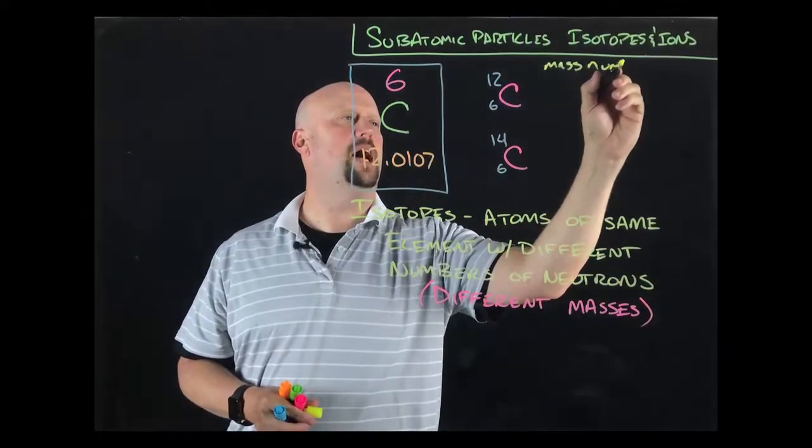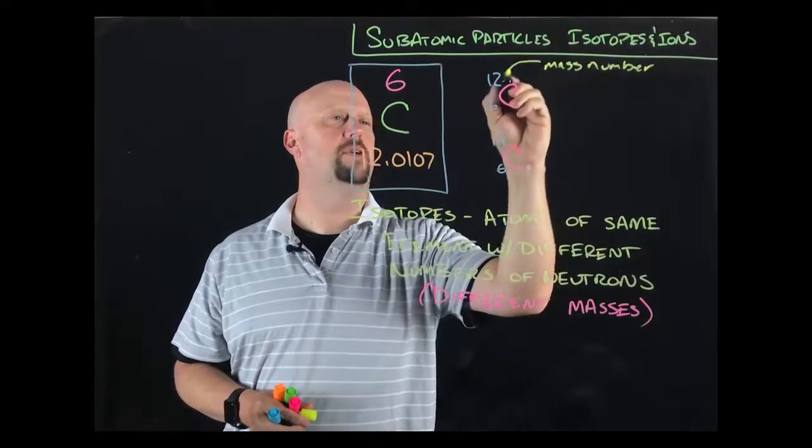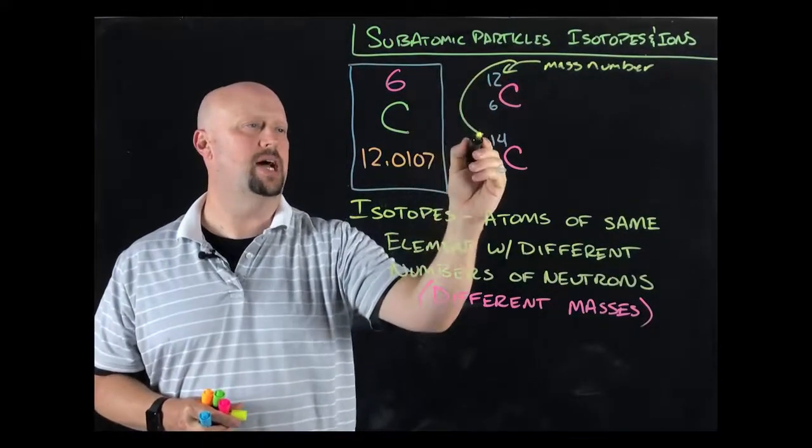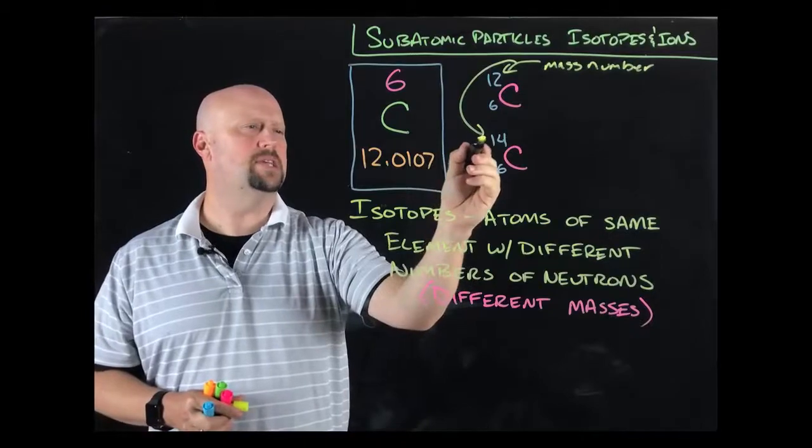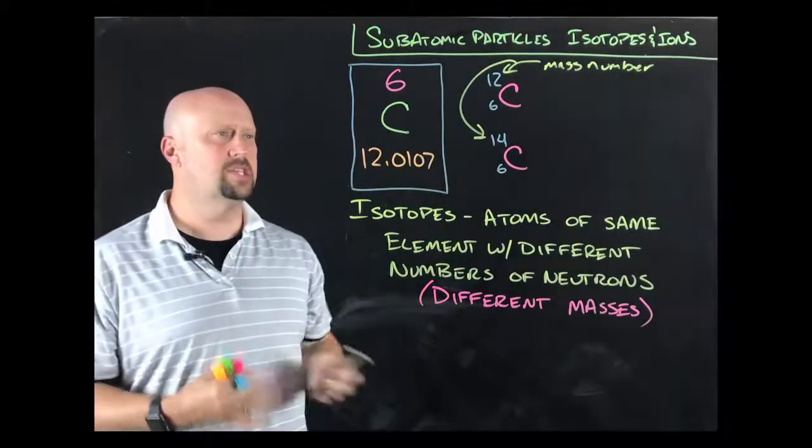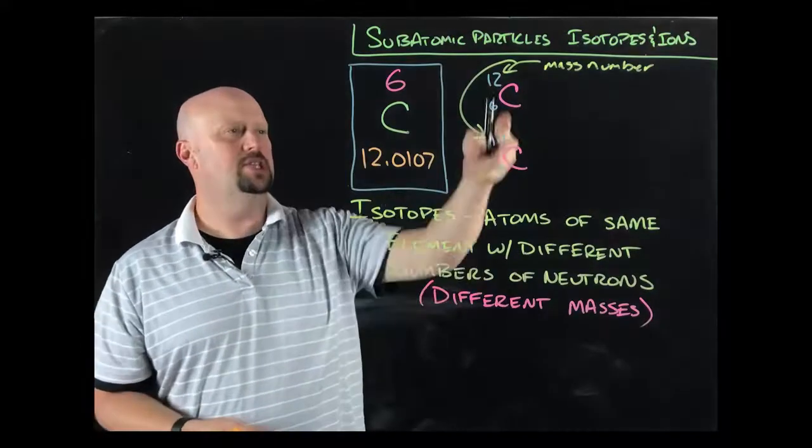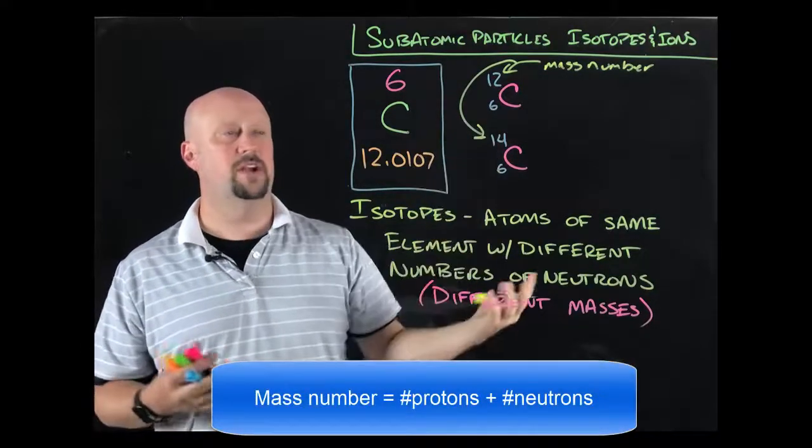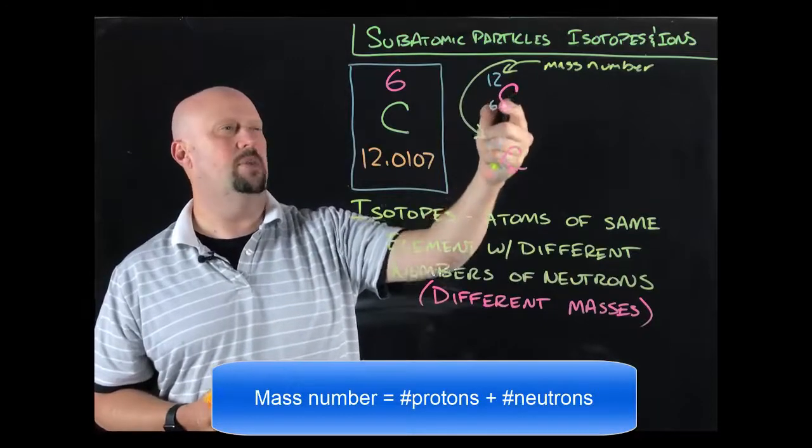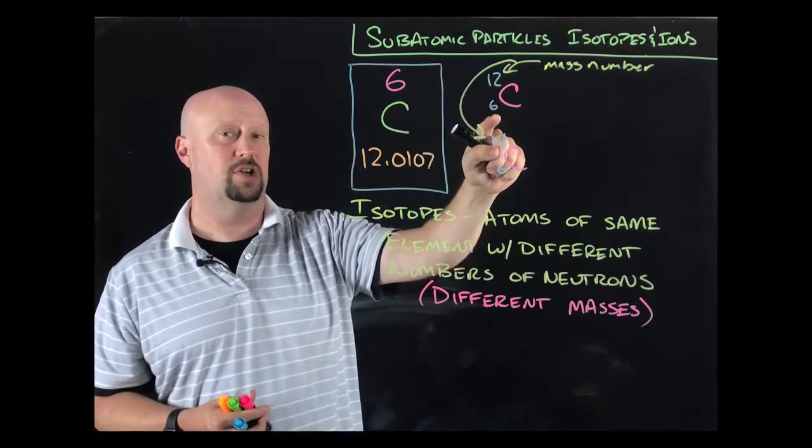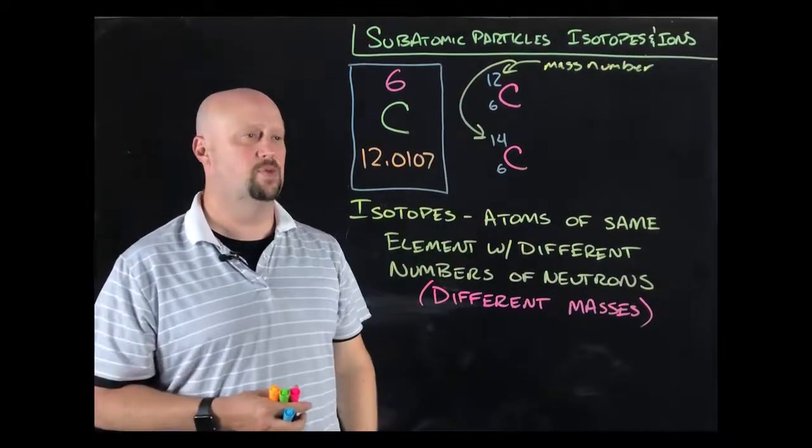That top number is the mass number. And if you remember from the last video, what we said mass number is, and this also is a mass number, that the mass number is the number of protons plus the number of neutrons. And so what you can immediately tell here is that these two things have different masses and different numbers of neutrons. This carbon is going to have six neutrons because it has six protons, and six neutrons plus six protons gives me a mass number of 12.